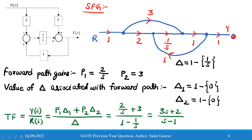Applying all values in the transfer function: T = Y(s)/R(s) = (P1 * delta_1 + P2 * delta_2) / delta. Substituting: P1 = 2/s, delta_1 = 1, P2 = 3, delta_2 = 1, and delta = 1 − 1/s. This gives T = (2/s + 3) / (1 − 1/s), which simplifies to (3s + 2) / (s − 1). This is the answer found using the signal flow graph method.